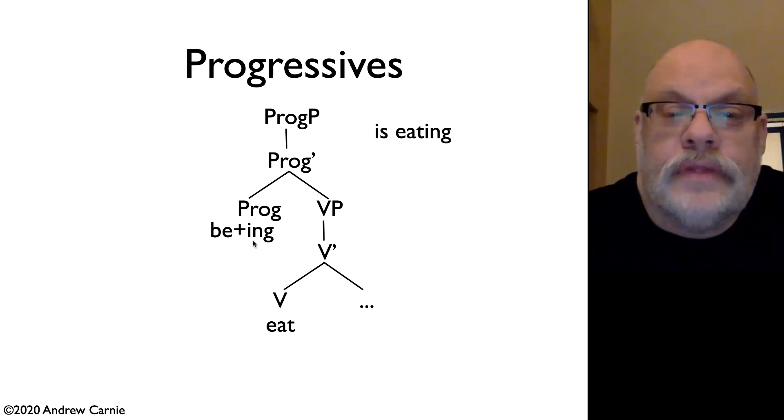However, this -ing is in the wrong place. If we have is eating, we want the -ing on eat. So we can do affix hopping again, and take that -ing and lower it down onto eat. And that gives us is eating.